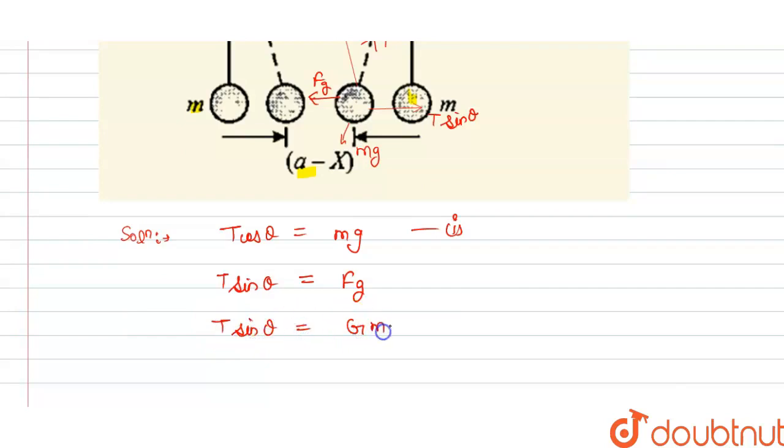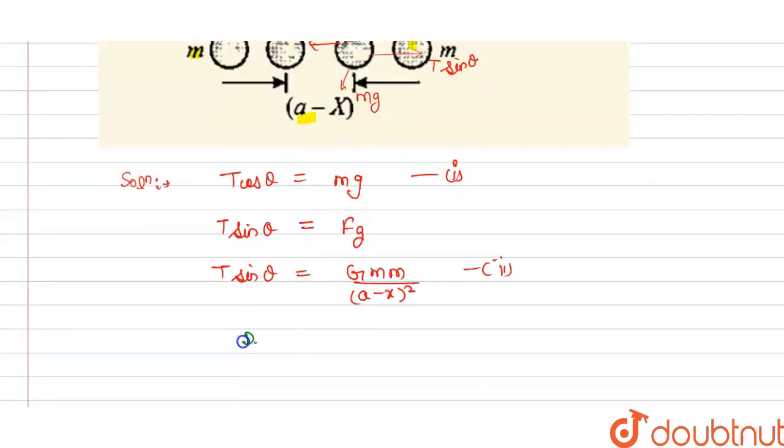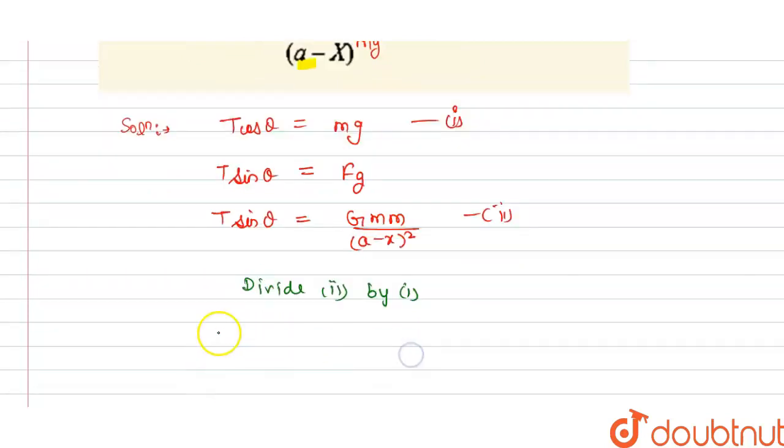And T sin theta is equal to gravitational force Fg. So this will equal to Gm²/(a-x)². And this is our equation 2. So divide equation 2 by equation 1.